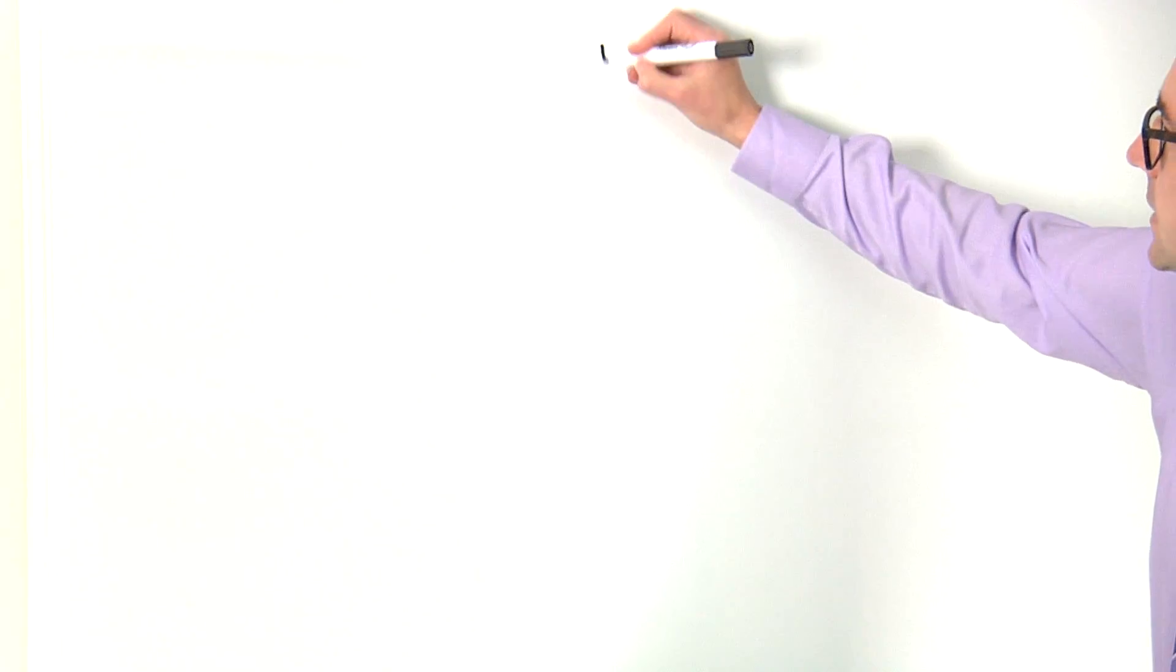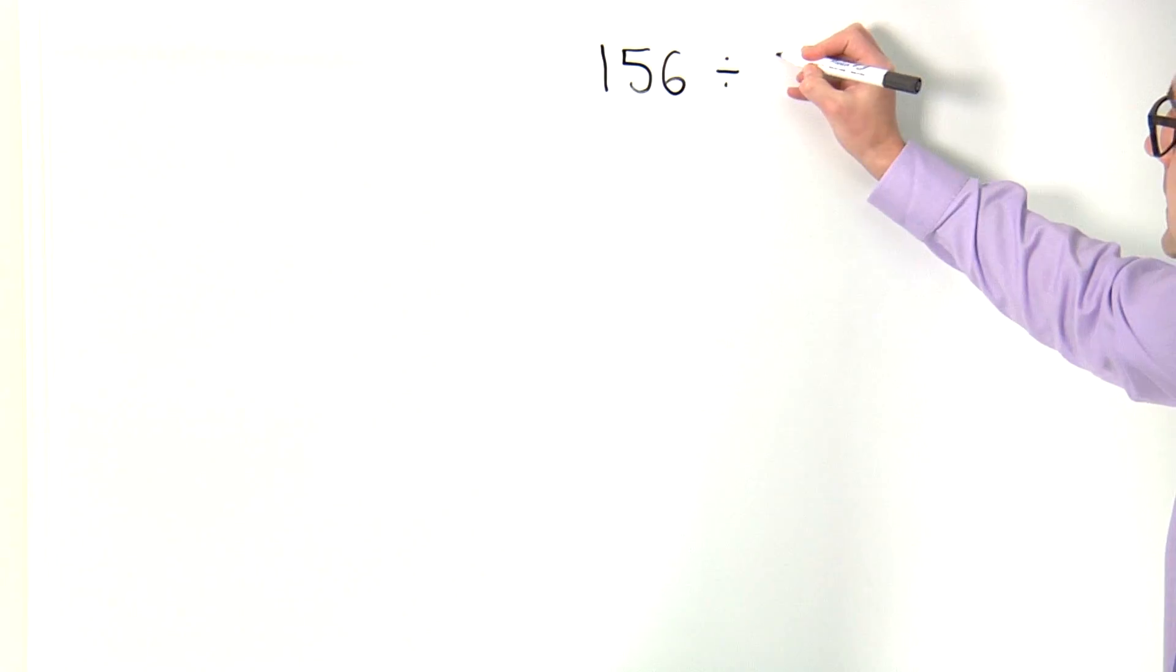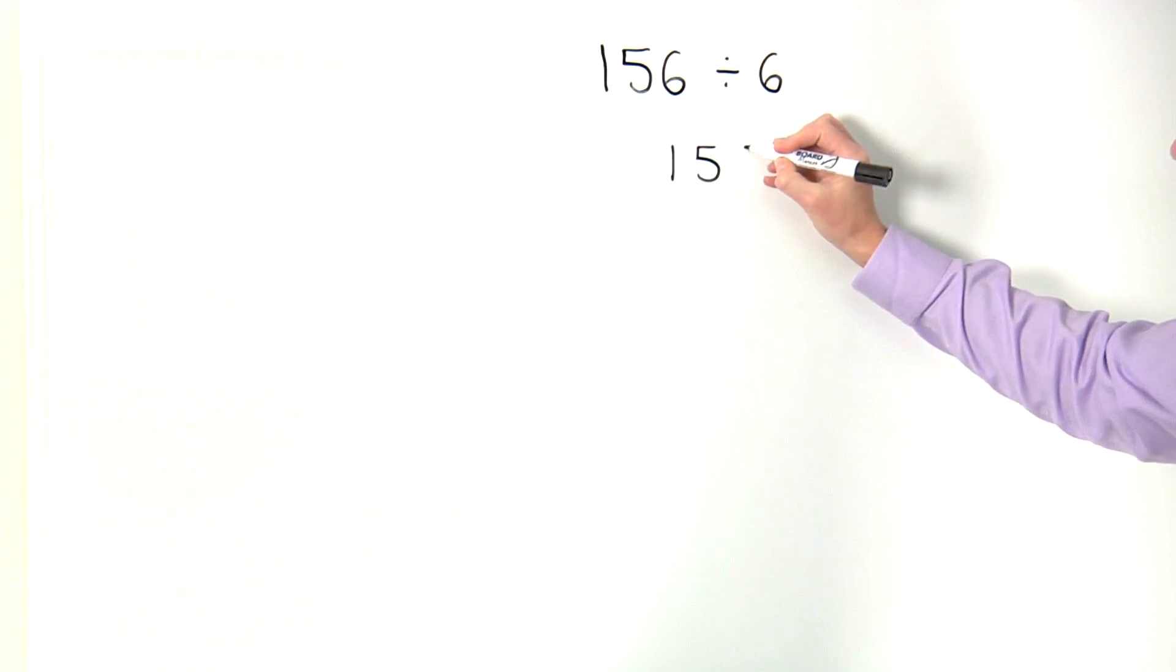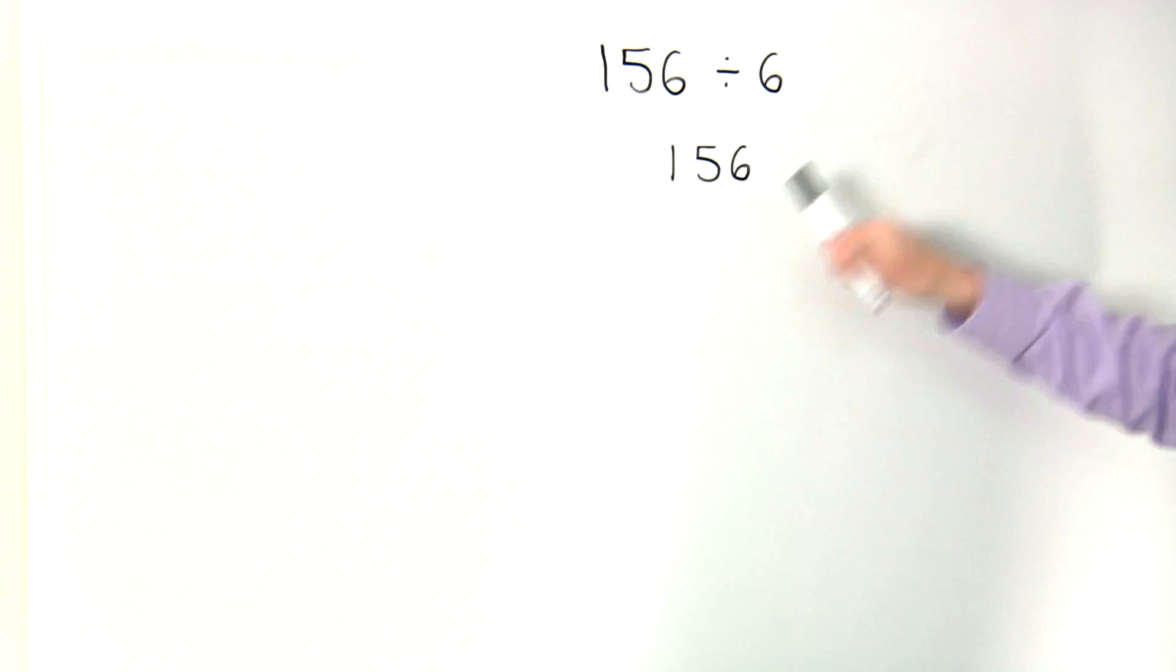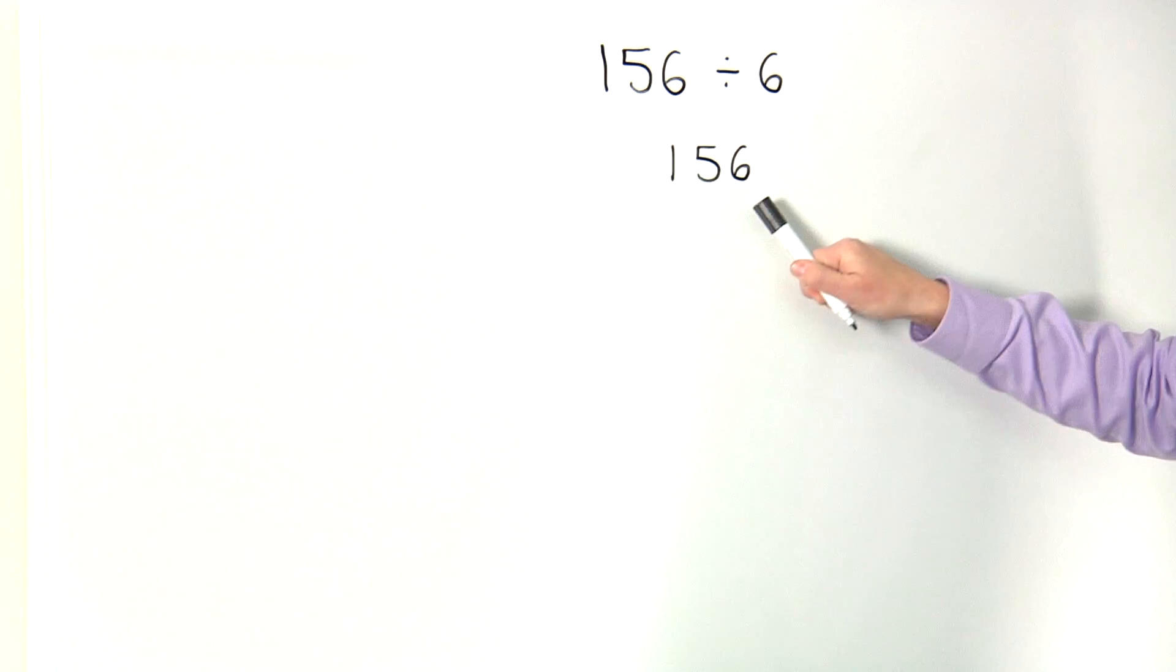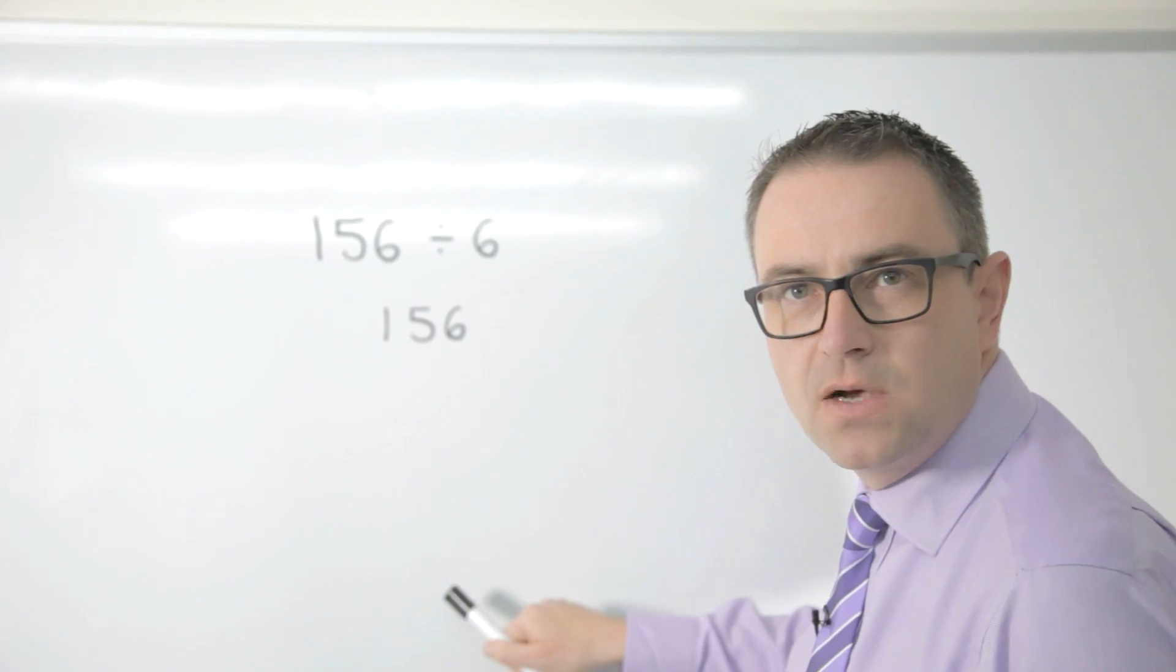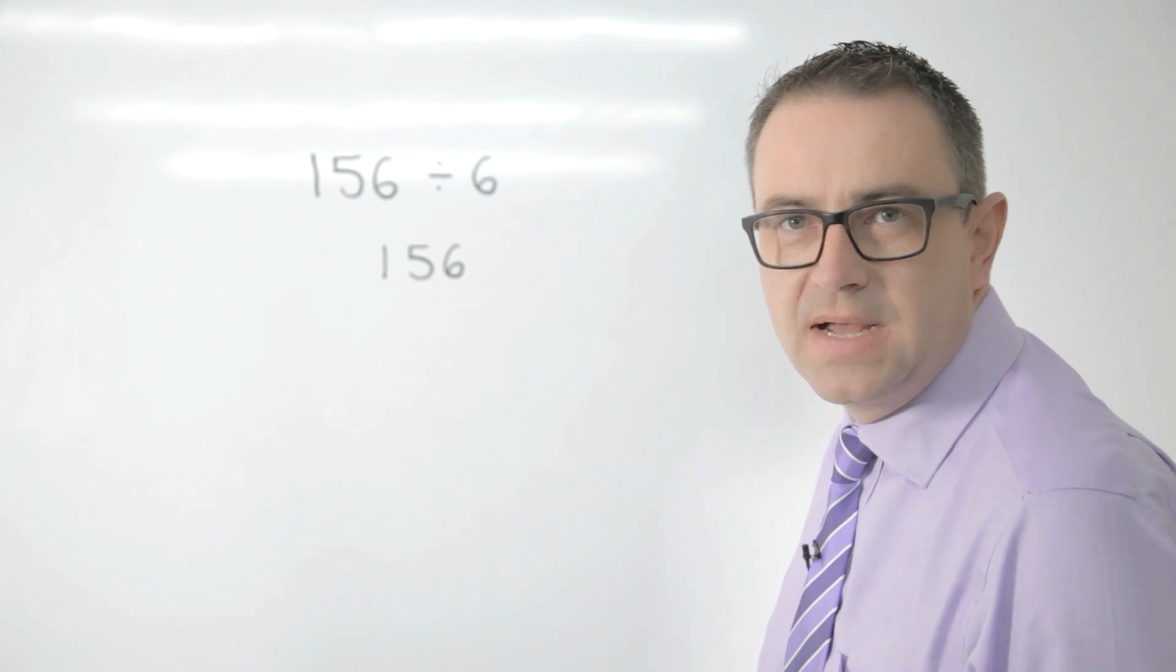So I'm going to take the calculation 156 divided by 6. I start with the 156 and I'm looking at how many lots of 6 will fit into this number. I could look at one lot and then another lot and another lot and so on, but by doing so this is going to take an inordinate amount of time.